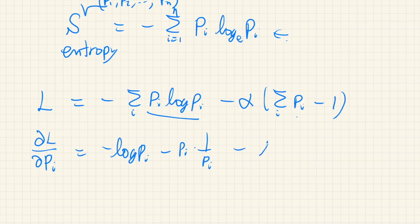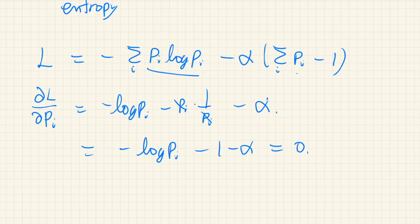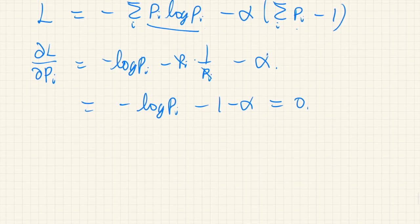From the pi terms we get just alpha. We can cancel terms and we get negative log pi minus one minus alpha, and at the maximum point this should be equal to zero. Solving this for pi, we get that pi should be equal to the exponential of negative one minus alpha.